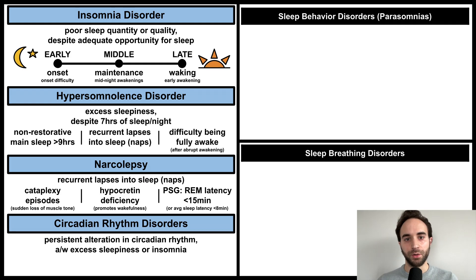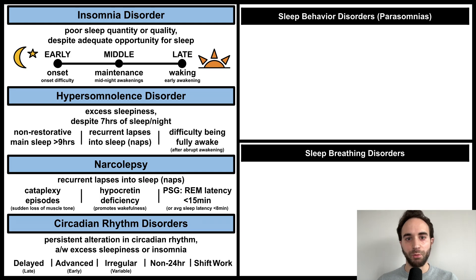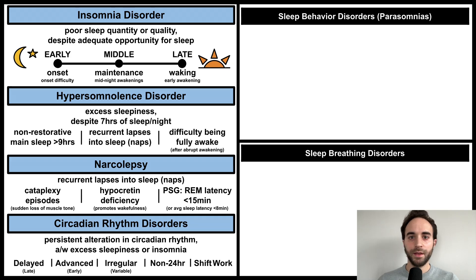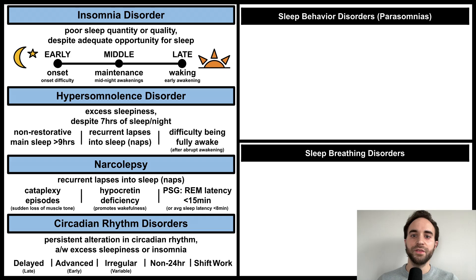The circadian rhythm disorders involve a persistent alteration in circadian rhythm and sleep schedule, associated with excess sleepiness or insomnia. This can take one of several forms. In the delayed type, the patient falls asleep and wakes up late, whereas in the advanced type, the patient falls asleep and wakes up early. In the irregular type, the sleep schedule is variable. In the non-24-hour type, the sleep schedule does not follow a usual 24-hour cycle — they may sleep every 12 hours or only once every 36 hours. And in the shift work type, the sleep schedule adjusts to shift work, so they may be awake at night and asleep during the day.